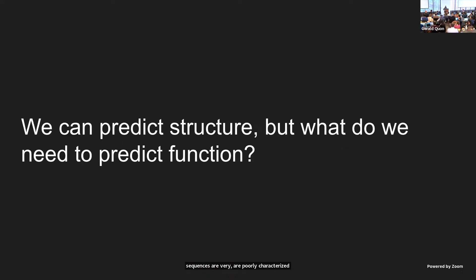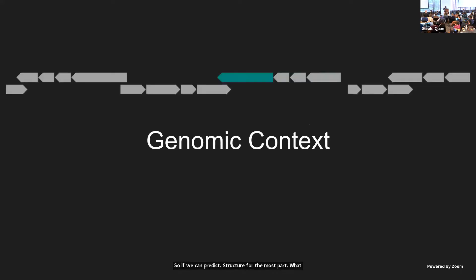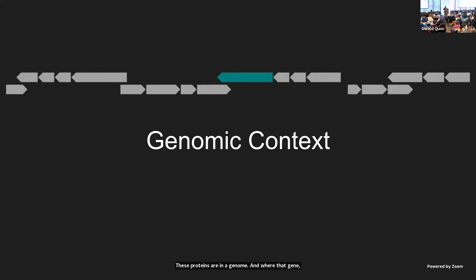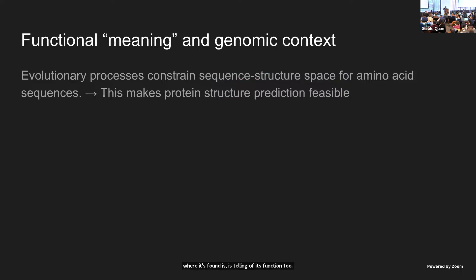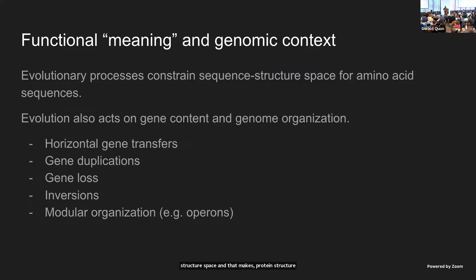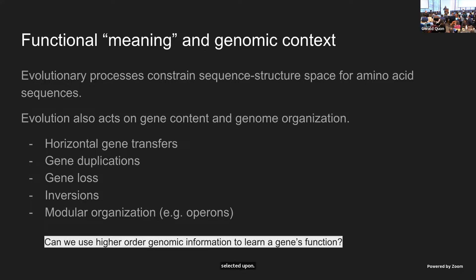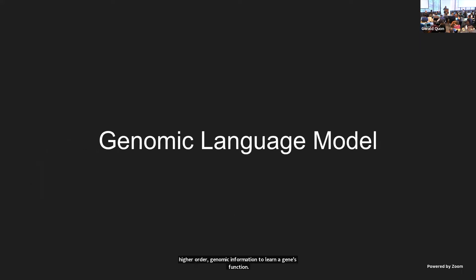So if we can predict structure for the most part, what do we need to predict function? A key element we've been missing is genomic context — where a protein is found is telling of its function. Evolutionary processes constrain sequence structure space, making protein structure prediction feasible using ML. Evolution also acts upon gene content and genome organization: horizontal gene transfers, gene duplications, loss, inversions, and modular organization of genes are all highly selected upon. So we started with the question: can we use higher-order genomic information to learn a gene's function? And with that, we'd like to introduce the genomic language model.